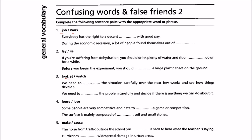Next: lay and lie. If you are suffering from dehydration, you should drink plenty of water and sit down or lie down for a while, because if you are dehydrated you should lie down — you should not be in the standing position. And before you begin the experiment, you should lay a large plastic sheet on the ground. 'Lay' means place; when you are talking about placing a thing, use 'lay', and 'lie' for sentences like the first one.